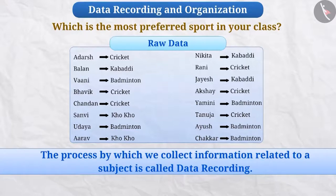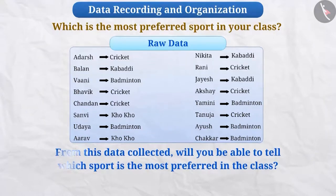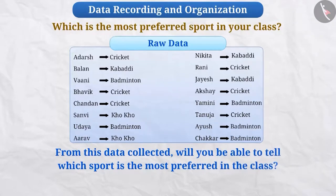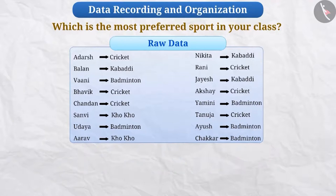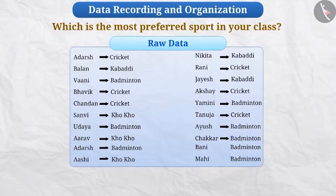Sometimes it is not easy to draw any conclusion from the raw data collected. From this data, will you be able to tell which sport is the most preferred in the class? This is difficult to detect. Similarly, if the number of students in the list increases, then it becomes even more difficult.